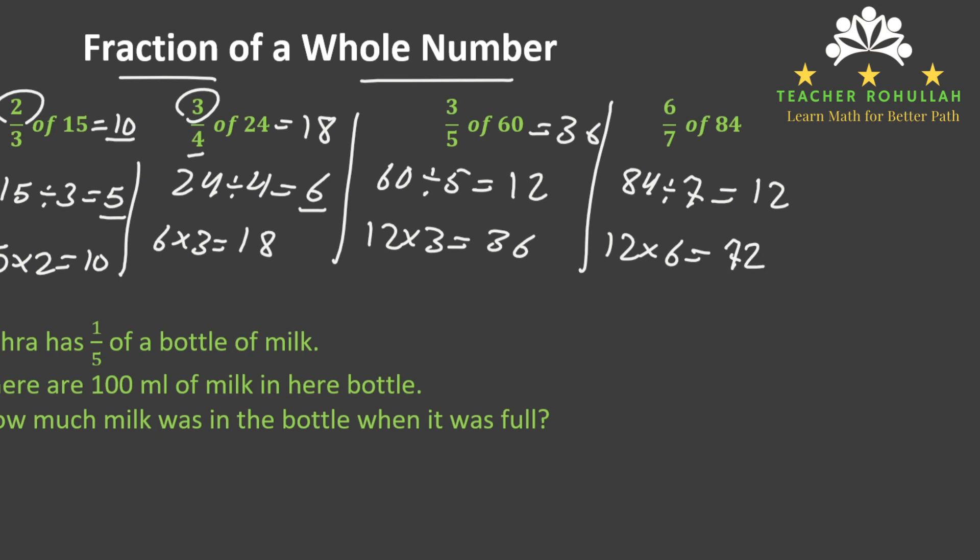It means if we divide 84 into 7 equal parts, 6 of them will be equal to 72.